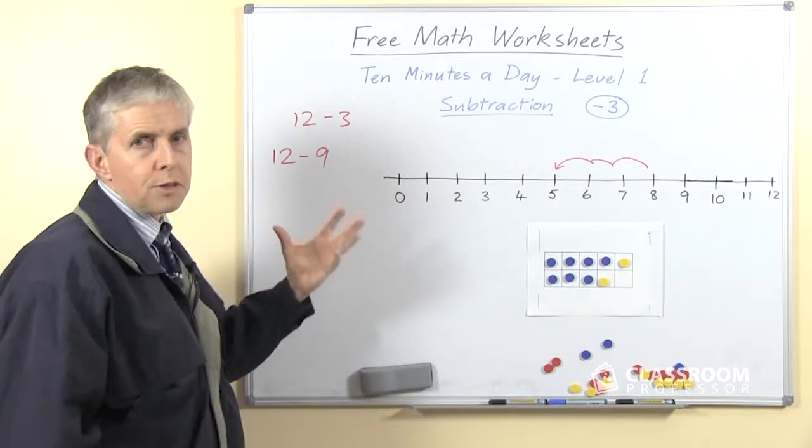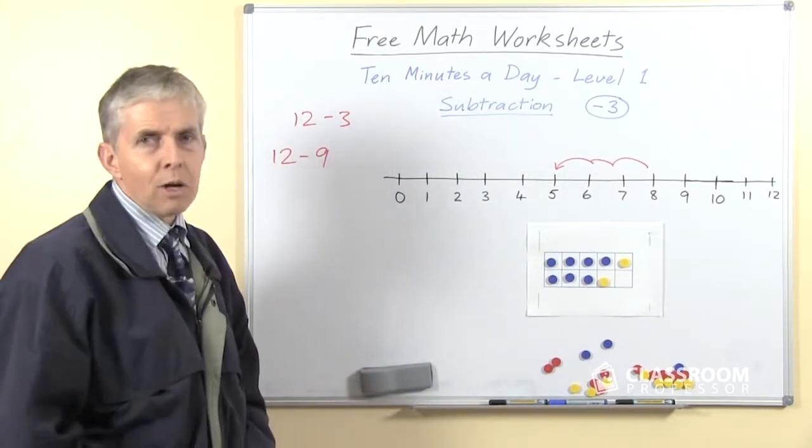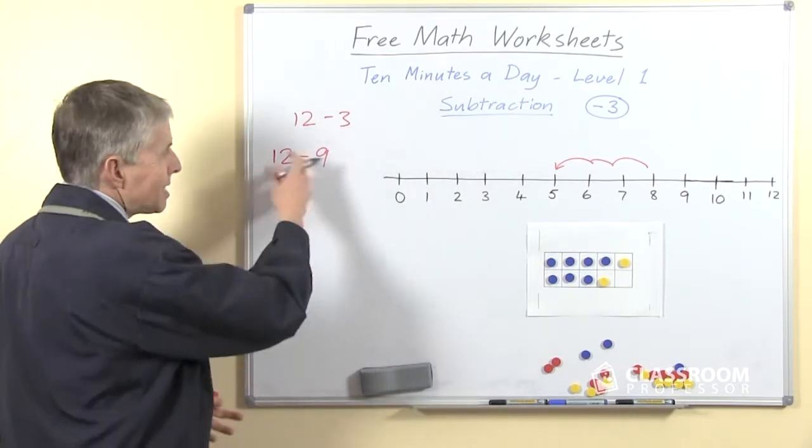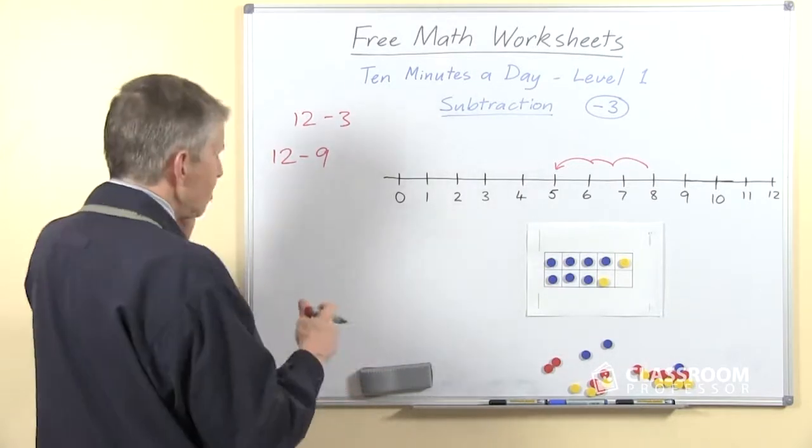We don't immediately have the 3 to count backwards, and as I said before, we're not going to count back 9, so we need another way of doing this. Even though this is in the family of subtract 3, it's a turnaround fact for 12 take away 3.